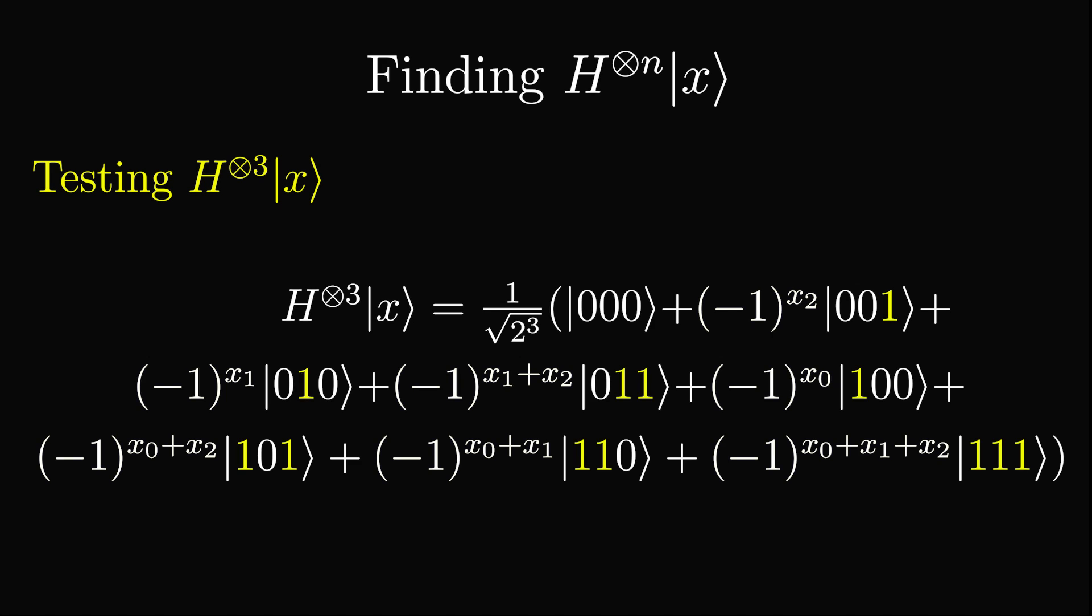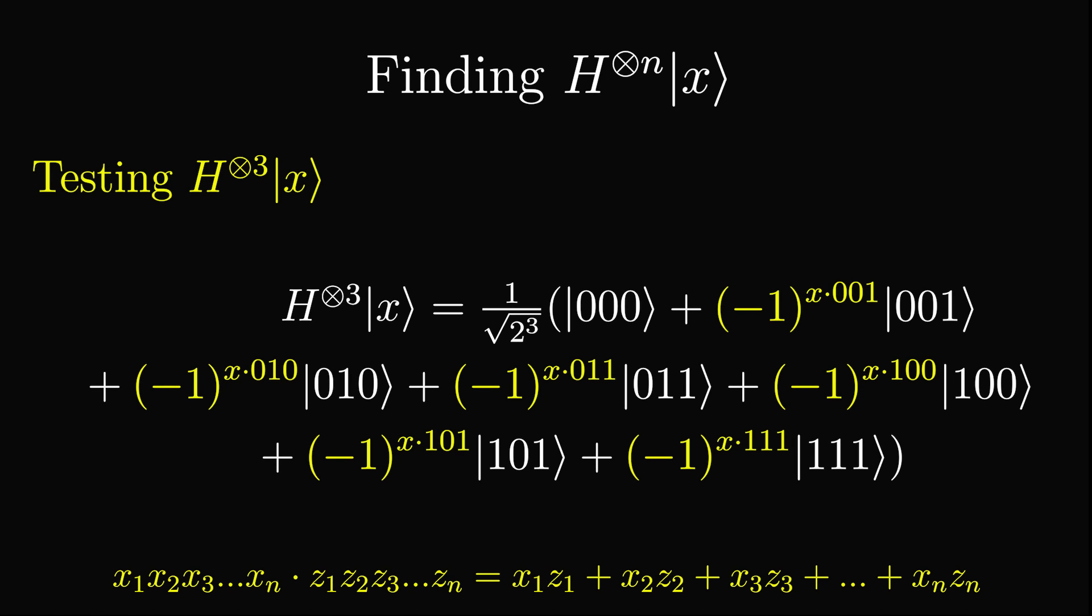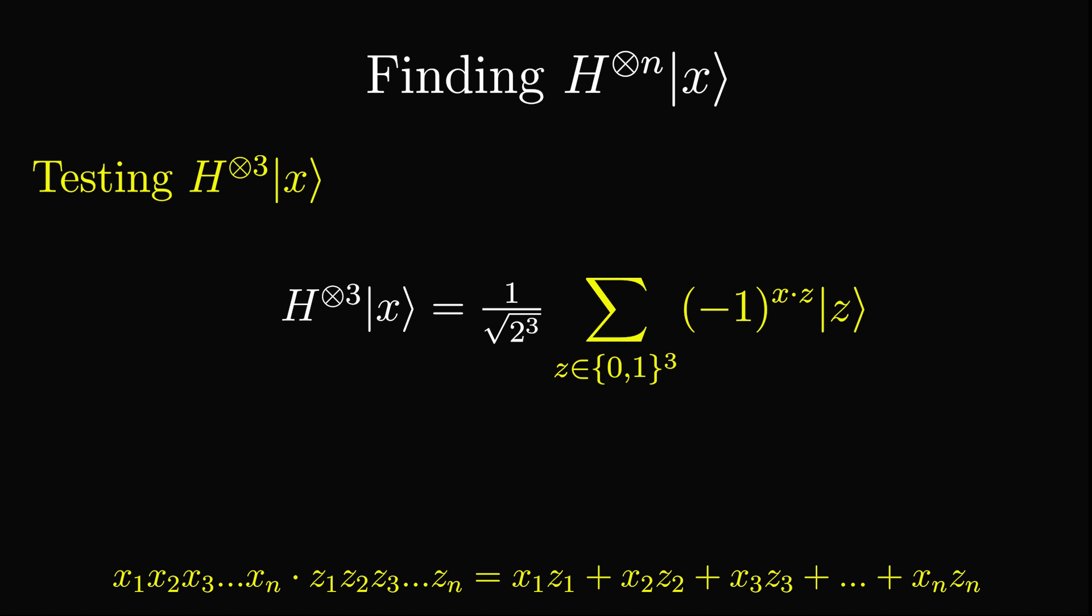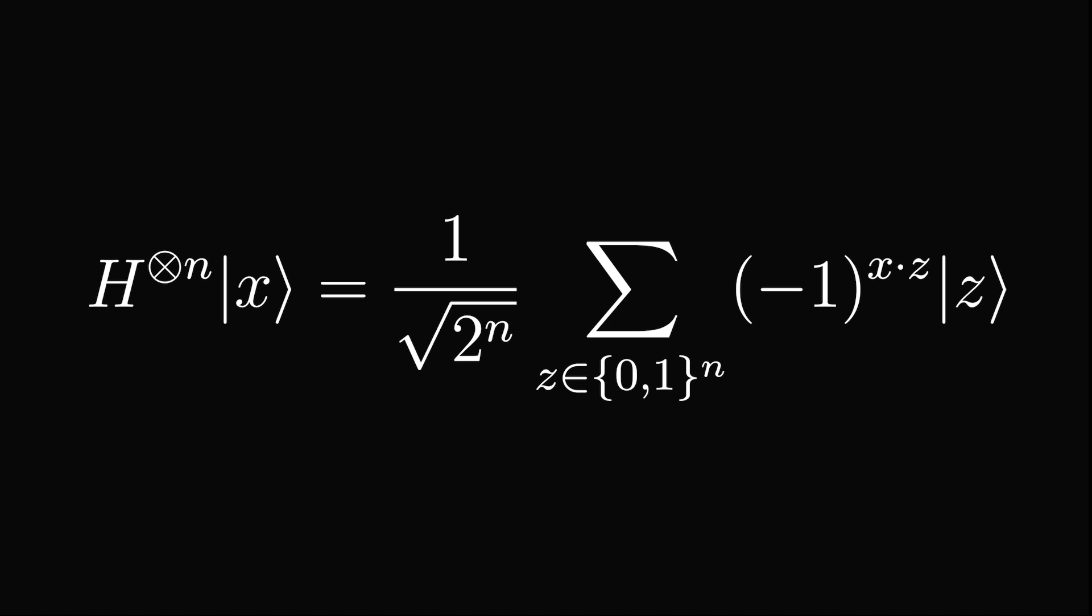As you can see, whenever there is a 1 in the state, negative 1 to the power of xi is times by that state, where i is the position of the 1. If we think about it, this is when both x and the new superposition created by the Hadamards have a 1 in the same position. We can rewrite the exponents as the dot product of x with a superposition state. We can now rewrite the entire expression as a sum over all z's, negative 1 to the power of the dot product of x and z. This identity is very important and used in a lot of quantum algorithms.